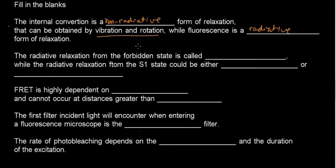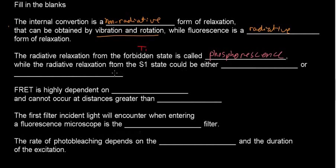The radiative relaxation from the forbidden state — the T1 state — is called something, while the radiative relaxation from the S1 state could be either something or something. I know that radiative relaxation from the T1 state is always phosphorescence. From the S1 state, you can radiate via fluorescence. And the other form — what other form is there? — is delayed fluorescence.